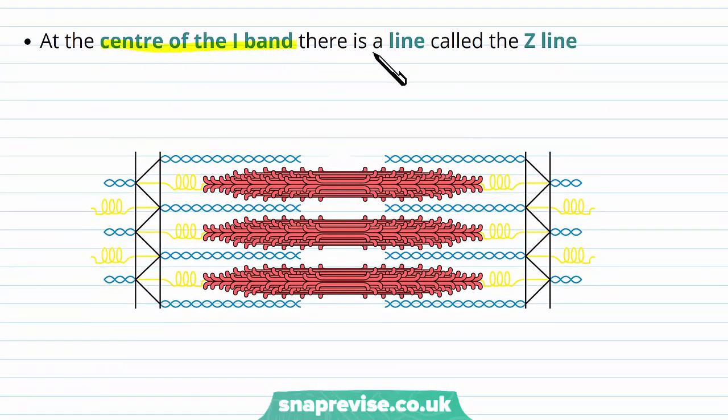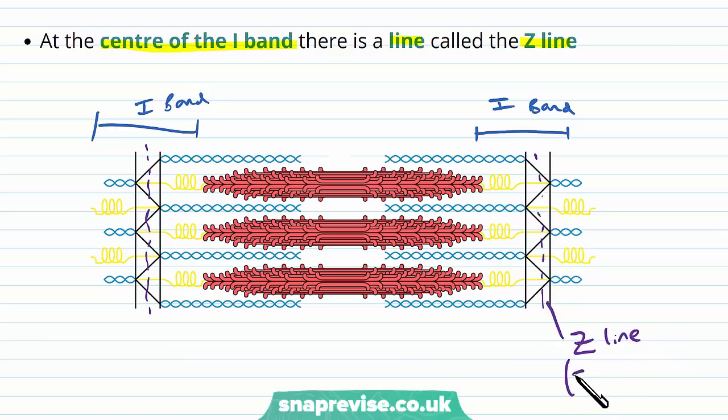At the centre of the I band, there is a line called the Z line. So go back to the I band, which is the lighter coloured band, which is either side of the A band. And although it's mainly made of actin, we've got this line running down here, covered by this black line area. And this line is called a Z line, sometimes it's called a Z disc.